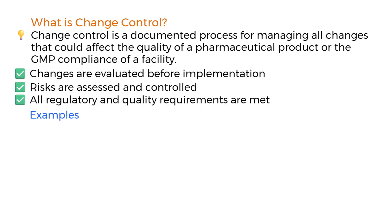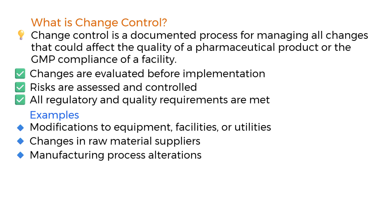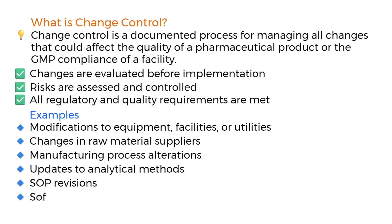Let's examine some examples of changes that require change control: modifications to equipment, facilities, or utilities; changes in raw material suppliers; manufacturing process alterations; updates to analytical methods; SOP revisions; and software or computerized system upgrades.